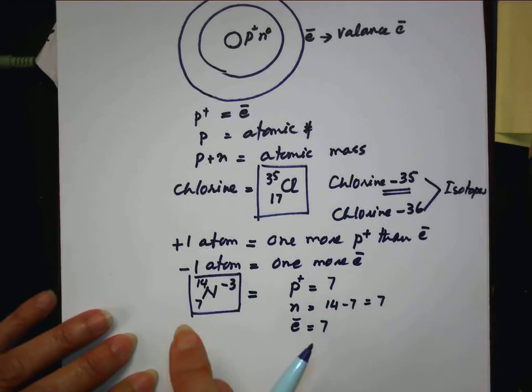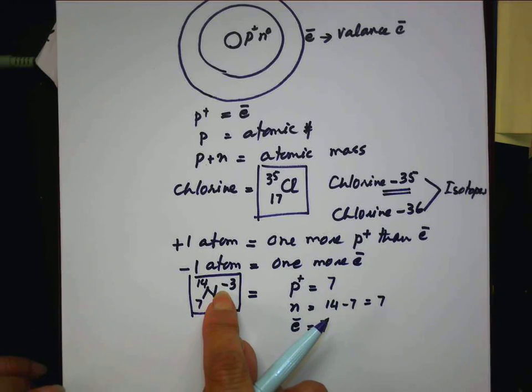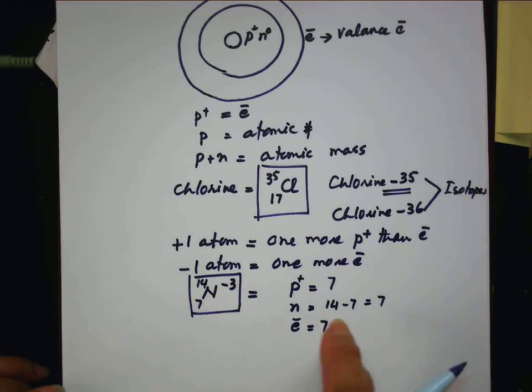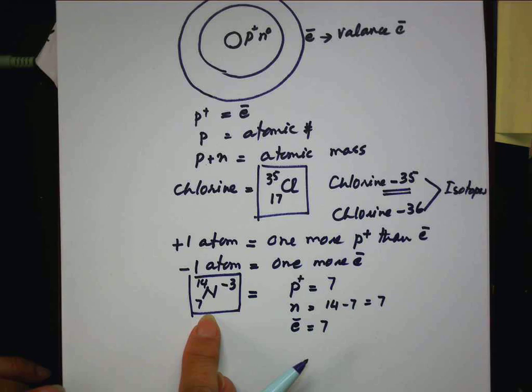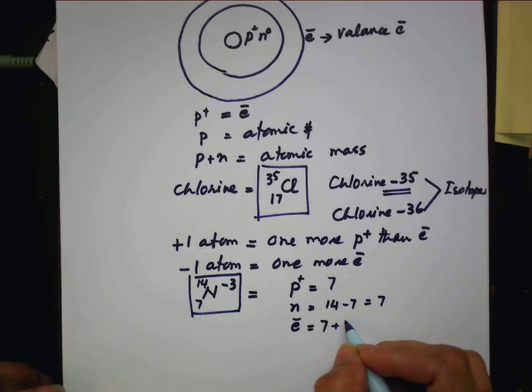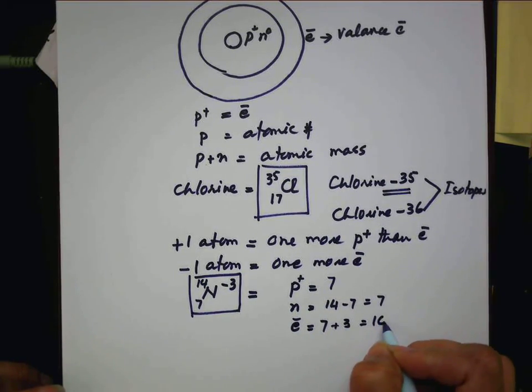But this atom has negative three. So how many extra electron will you have? Three. Three extra. So total of? Ten. Ten. Ten. Make sense? Got it?